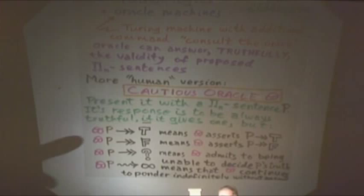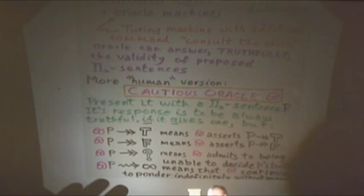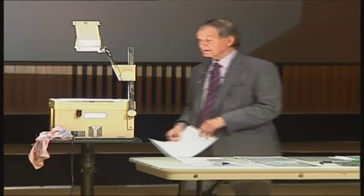The notation I'm using: if pomega looks at proposition P, it's allowed to say T (yes, it's true), or F (no, it's false), or a question mark (sorry, I'm not going to answer), or it's still whirring away to infinity (I'm still thinking about it). That's the kind of generalized Turing machine I'm going to think about — a pomega device. Apart from being able to consult this oracle from time to time, it's built like an ordinary computer or Turing machine.